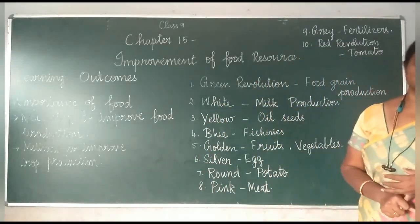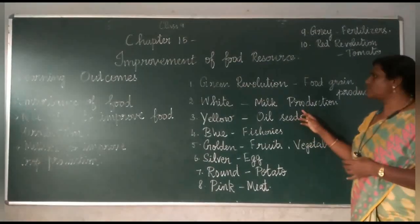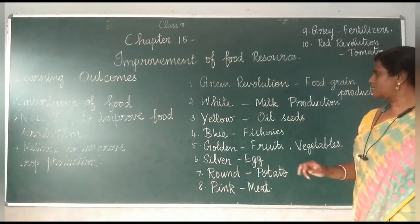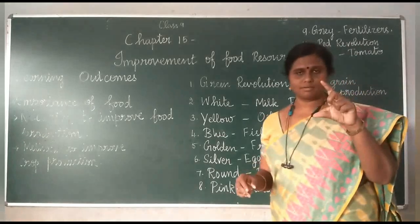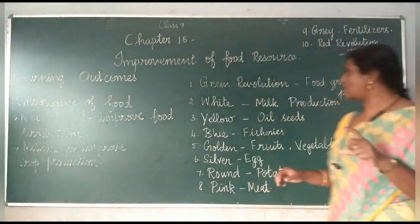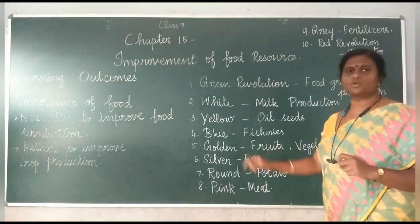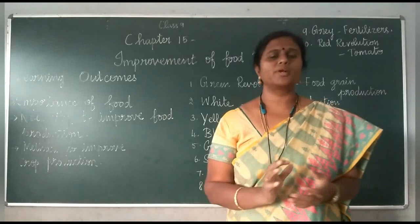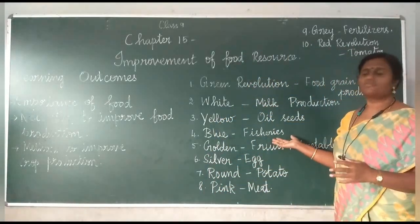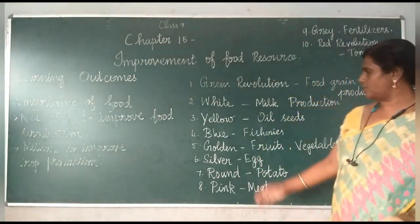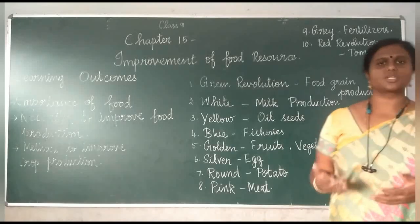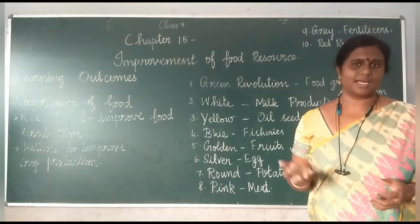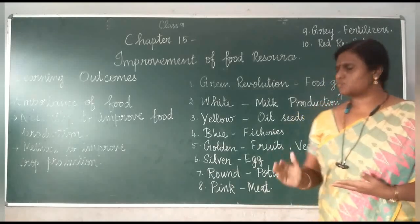The second one is White Revolution, which deals with the increased production of milk — milk is white in color, so it is White Revolution. Third is about oil seeds — you know the color of oil, it is yellow, so it is called Yellow Revolution. The next one is Blue Revolution: when you draw water, you color it blue, so Blue Revolution refers to fishery — production of fish. The next one is Golden Revolution, which deals with the production of fruits and vegetables. Next is Silver Revolution — egg is silvery white in color, so production of eggs deals with Silver Revolution.